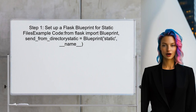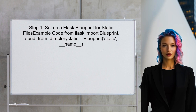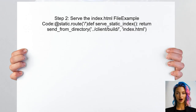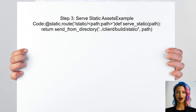To serve the built React application with Flask, first ensure that the Flask application is set up to serve static files correctly. This involves creating a blueprint for serving static files. Next, define a route to serve the main index.html file. This file is the entry point for the React application and should be served when the root URL is accessed. After that, create a route to serve the static assets like CSS and JavaScript files.